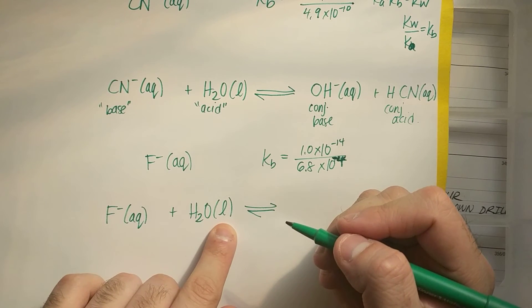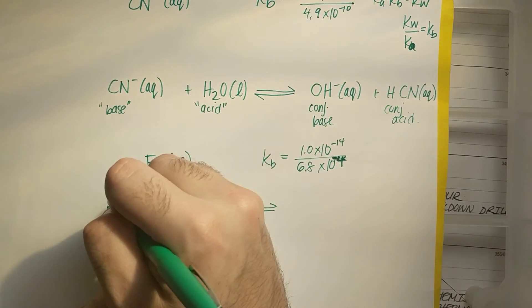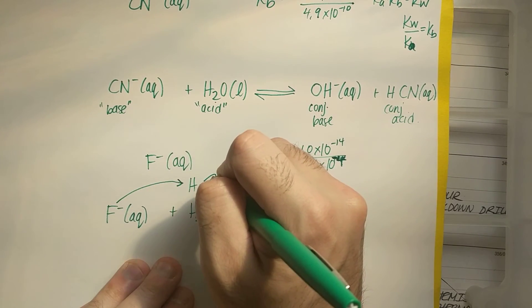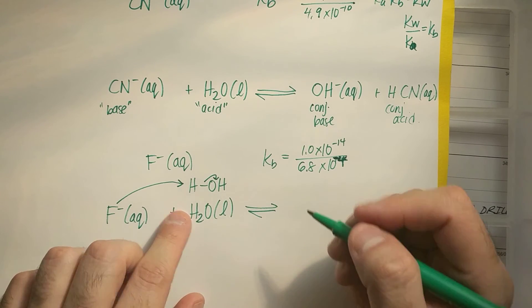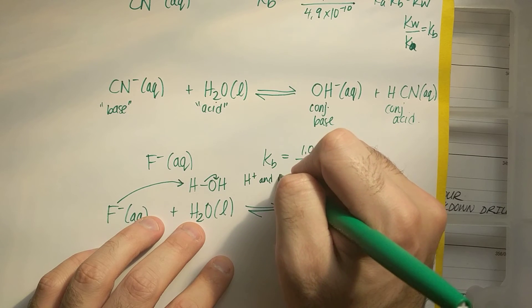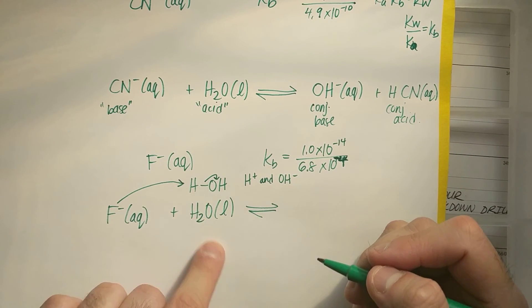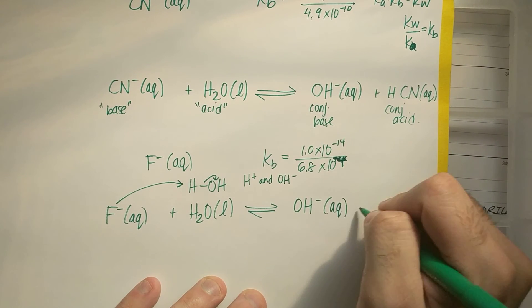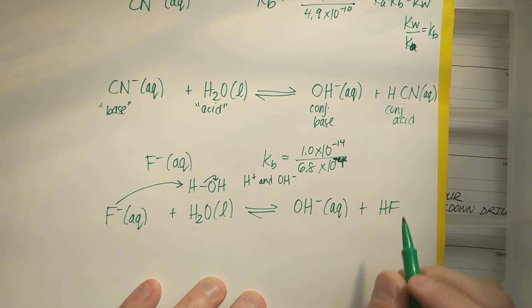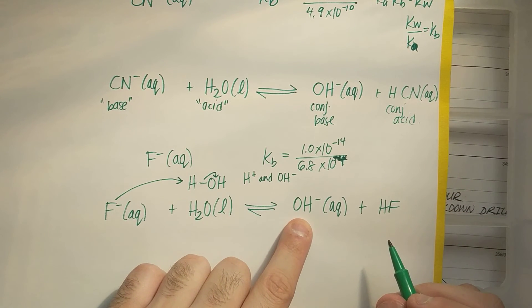That F minus is going to pull an H from H2O. H2O looks like this, really. That F minus is going to pull that H from H2O. And so H2O is technically H plus and OH minus. So that F minus is going to pull an H from there. I'm going to get OH minus left over plus HF. And again, I'll have my base, my acid, my conjugate base, my conjugate acid.